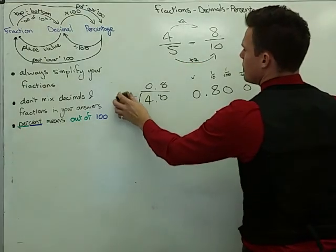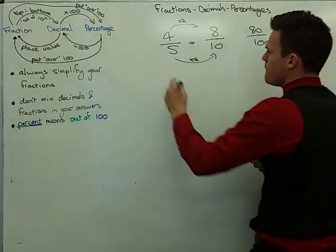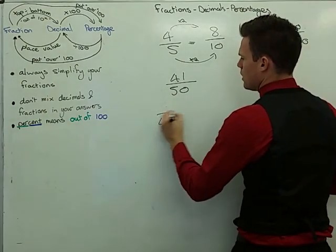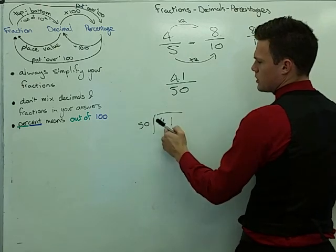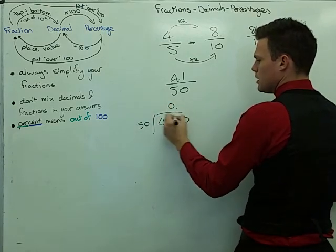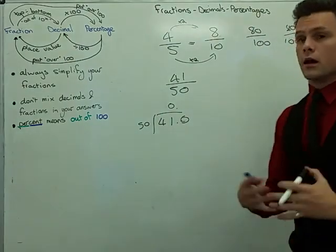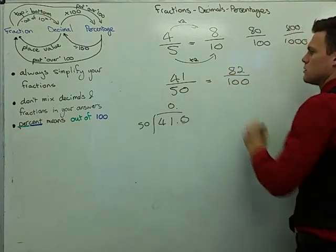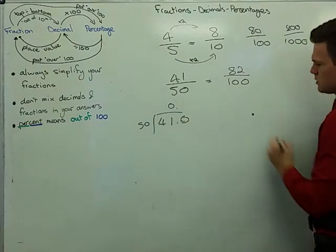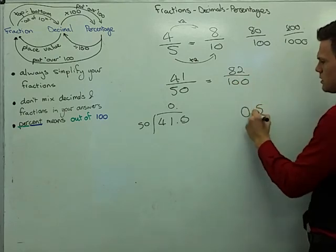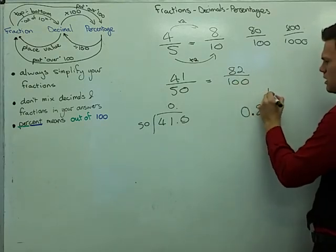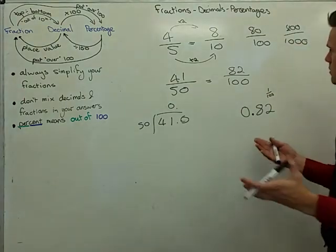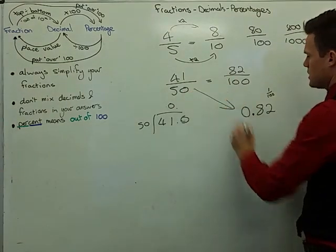This method becomes very important when I consider something like forty-one over fifty. I could do forty-one divided by fifty — it doesn't go into forty-one, so I get zero point, and now I have to think how many times fifty goes into four hundred and ten. Or I could look at this and think, well, that's eighty-two hundredths. Here's my decimal: I've got no units and I have eighty-two hundredths — eighty-two. My last number is in the hundredths column. So forty-one over fifty is the same as zero point eight-two.